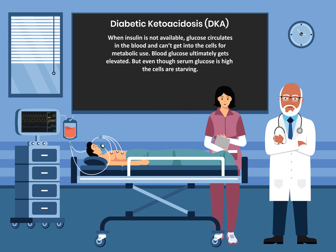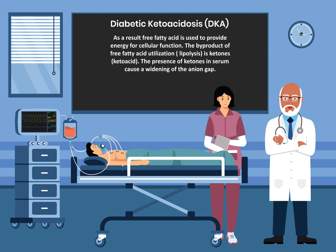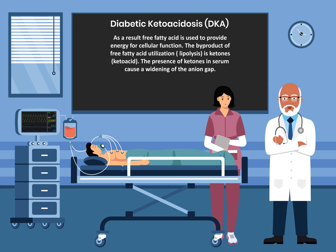When insulin is not available, glucose circulates in the blood and can't get into the cells for metabolic use. Blood glucose ultimately gets elevated. But even though serum glucose is high, the cells are starving. As a result, free fatty acid is used to provide energy for cellular function. The byproduct of free fatty acid utilization, which is lipolysis, is ketones, and it is regarded as ketoacid.